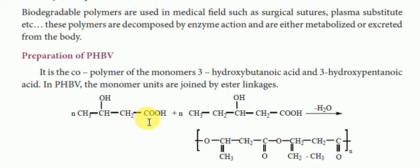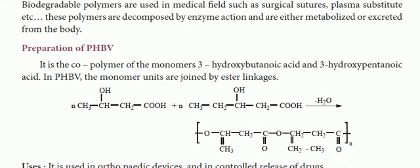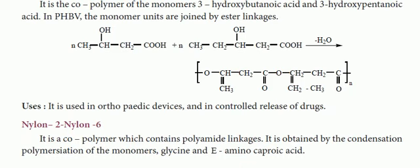The monomers are 3-hydroxybutanoic acid and 3-hydroxypentanoic acid, forming the copolymer called PHBV. PHBV is used in orthopedic devices and controlled release of drugs.